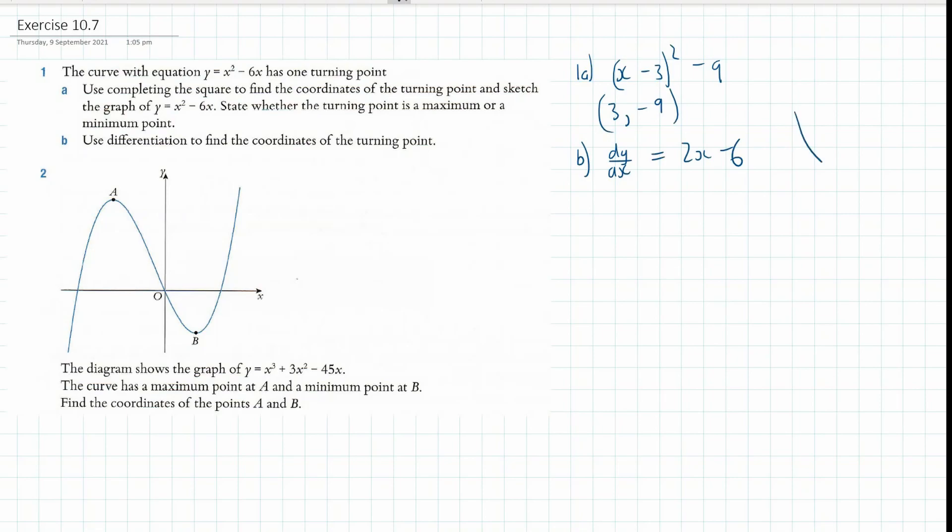So, a minimum point looks like this, and the gradient of that point is 0, because there's no change in y. So, I'm going to go 2x minus 6 equals 0, so 2x equals 6, so x is equal to 3.